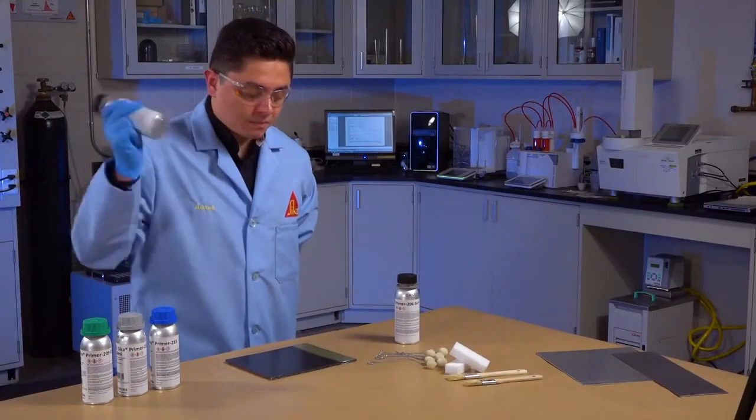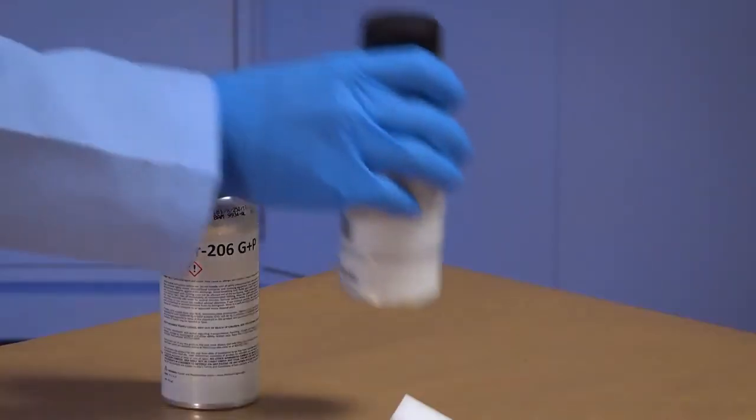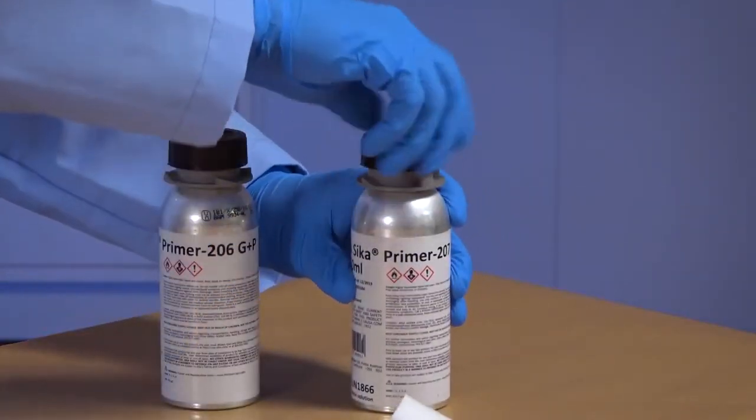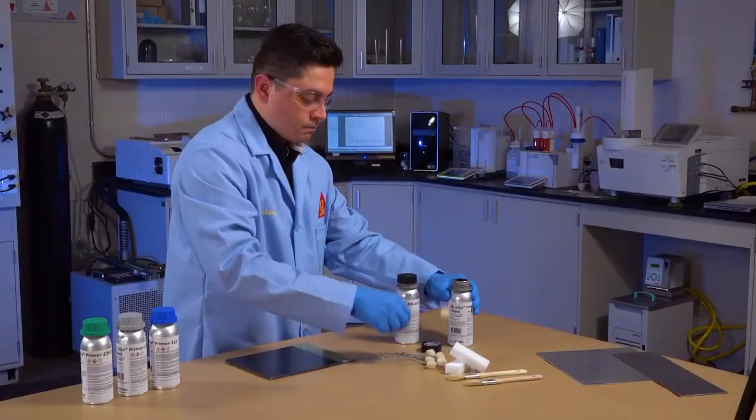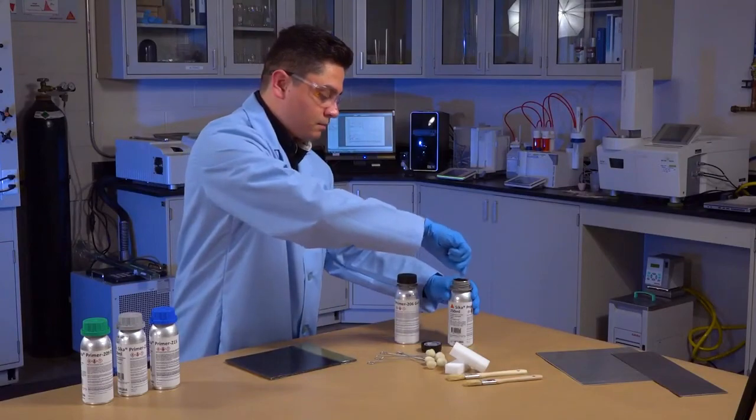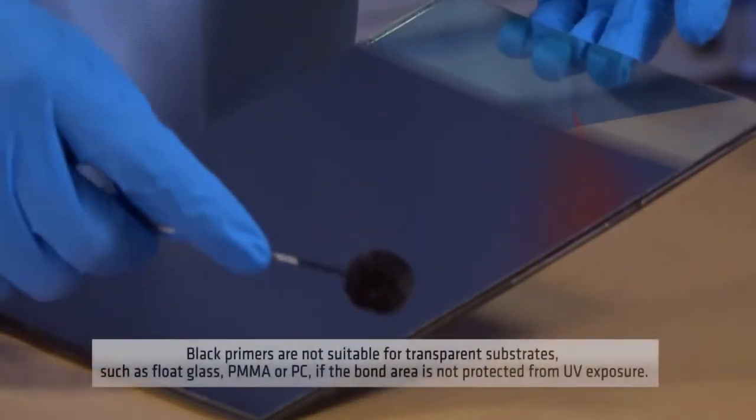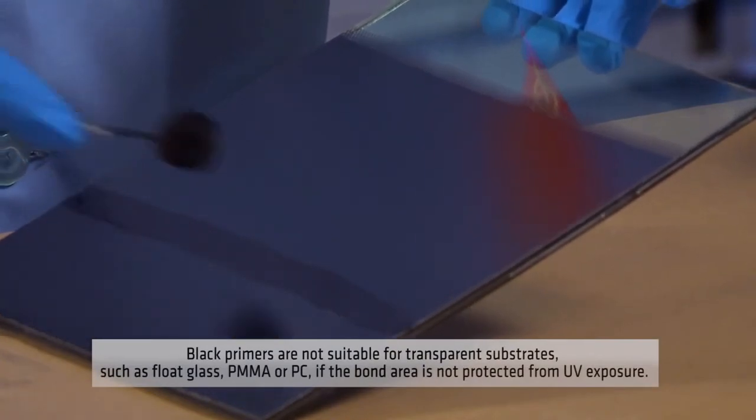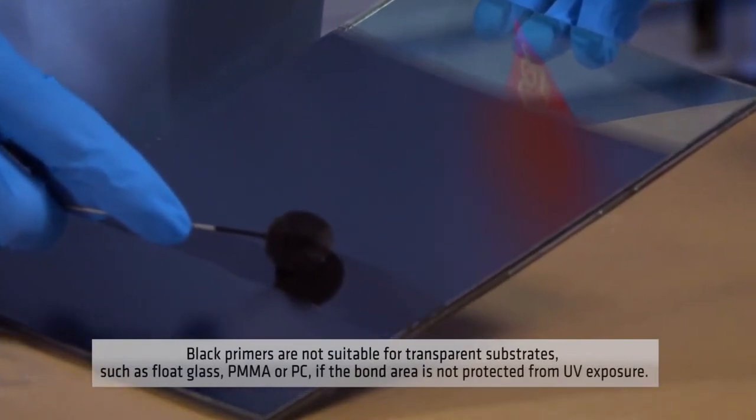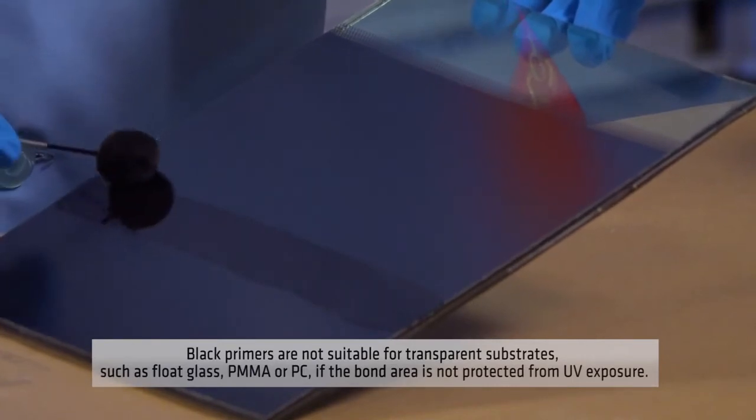Primers are only partly capable of protecting the bond line against UV radiation. If a ceramic screen print is not dense enough, Cica Primer 206 G Plus B or Cica Primer 207 AGR can enhance the tightness of the screen print. Nevertheless, black primers are not suitable for transparent substrates such as float glass, PMMA, or polycarbonate if the bond area is not protected from UV exposure via another primary protection means.